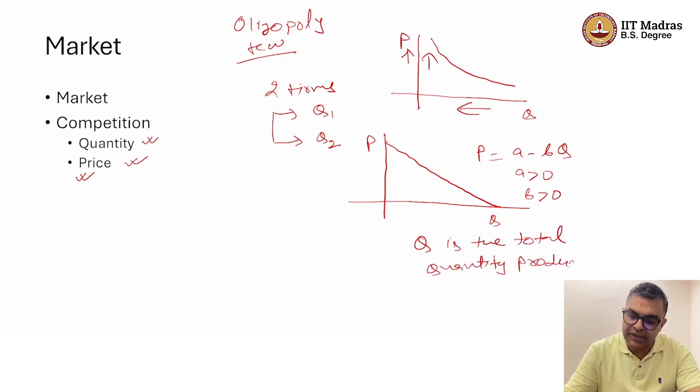Of course, it is not necessary that the relationship is always linear, but here we are taking a simple example to understand. Competition would have taken place between two firms producing the same item.